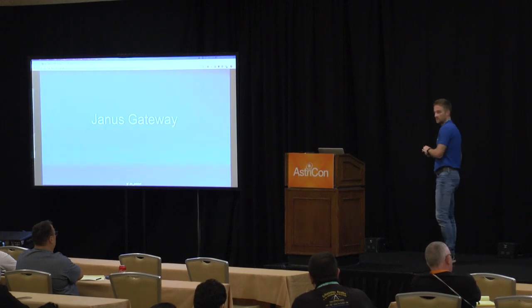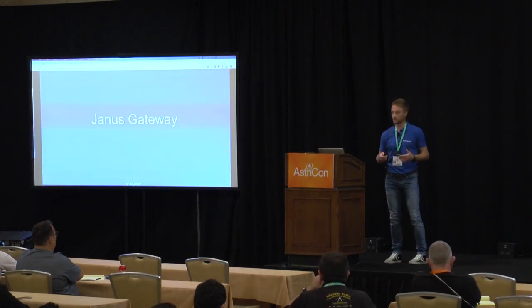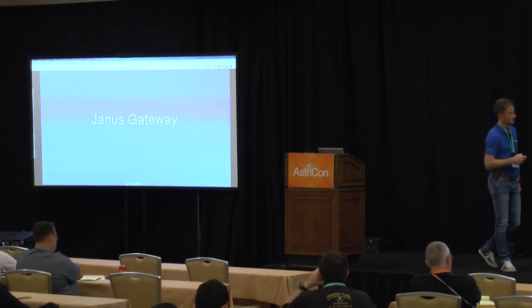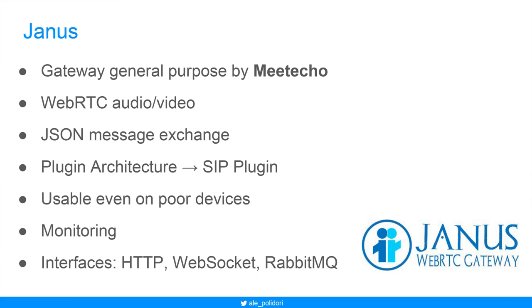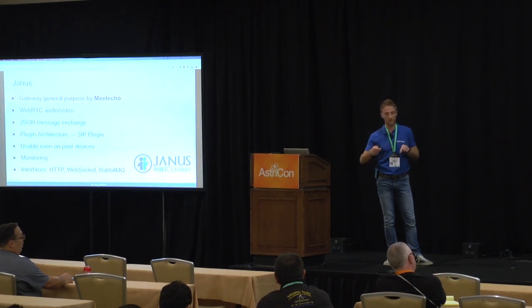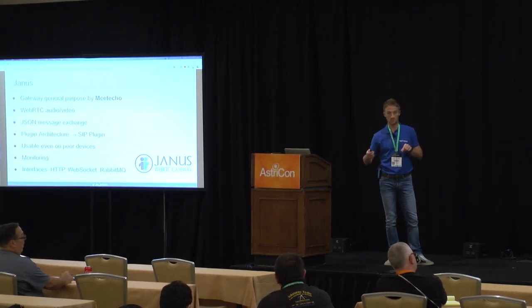This is another implementation of the SIP phone WebRTC, because during the years we decided to switch the implementation using a different product called Janus Gateway. What is it? Janus is a general purpose WebRTC gateway made by Meetecho company. The difference from SIPML5 is that previously the client interacted directly with Asterisk WebRTC, but now the browser communicates with Janus Gateway — a backend component which in turn operates with Asterisk directly using the SIP protocol.